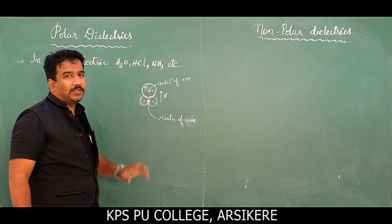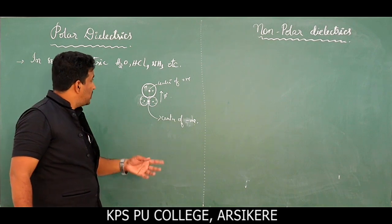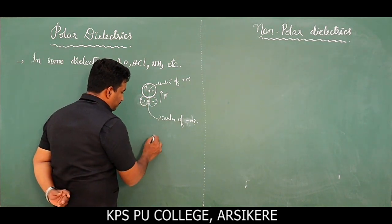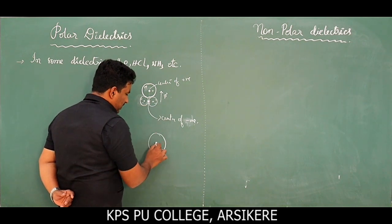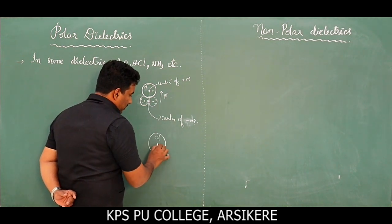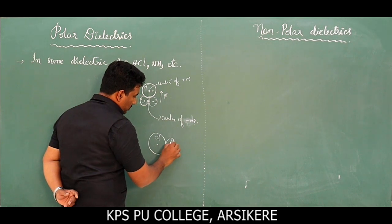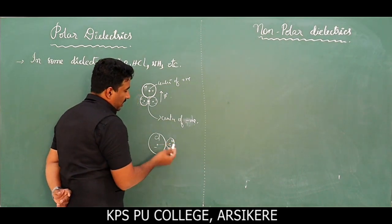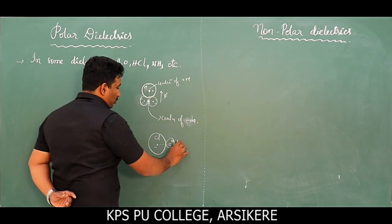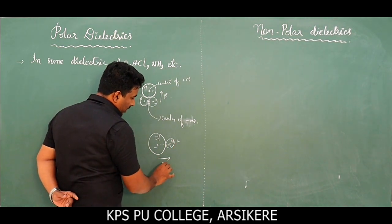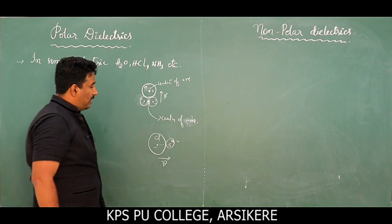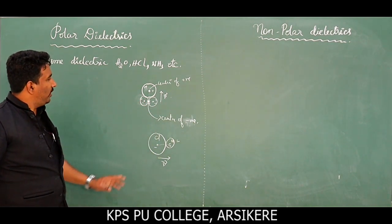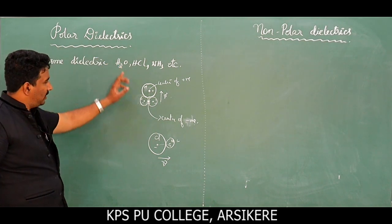This dipole moment exists because the center of positive charge is not coinciding with the center of negative charge — in the case of H₂O. Similarly for HCl: this is Cl and this is hydrogen. This is positive, this is negative, and they are not coinciding, so in both cases there will be a dipole moment.